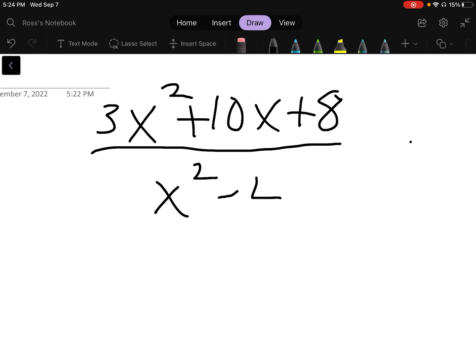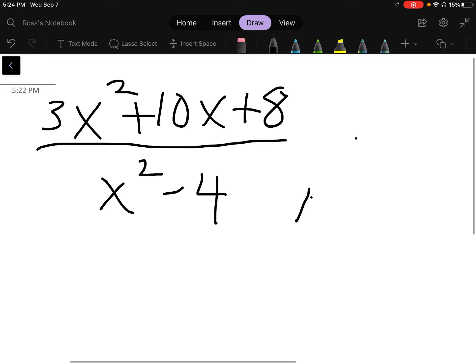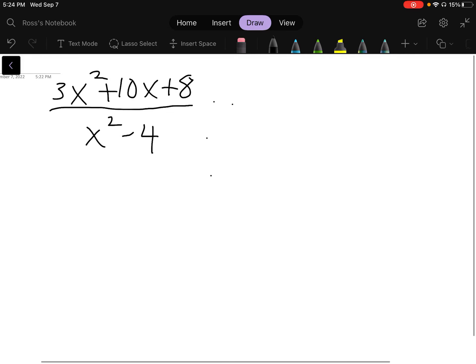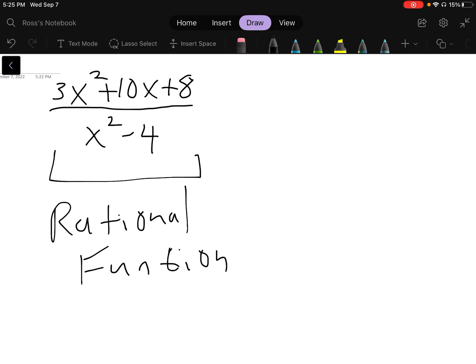It's my first time using this app so just bear with me, I'm still trying to figure out exactly how it works. So I have a function here: 3x squared plus 10x plus 8 over x squared minus 4. Just a little bit of housekeeping I guess you can say, this whole thing is called a rational function. Just so you know that term, when I talk about rational functions you know that means one function divided by another. I would write that down: rational function.